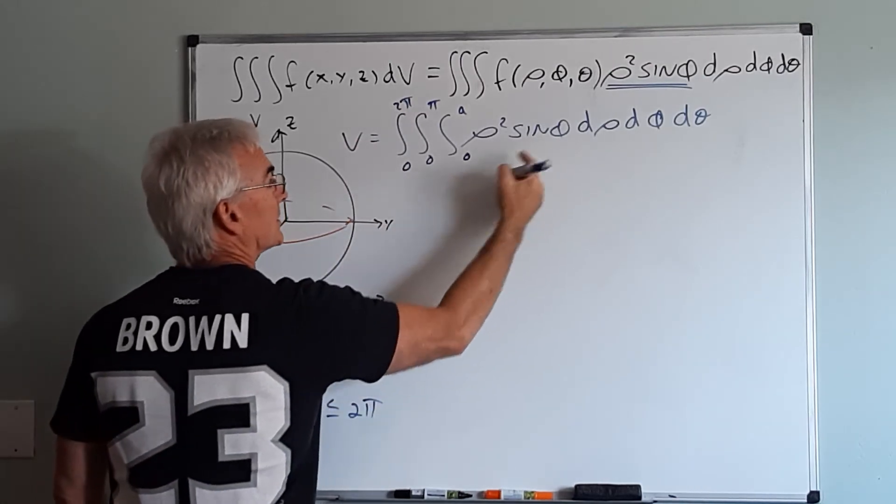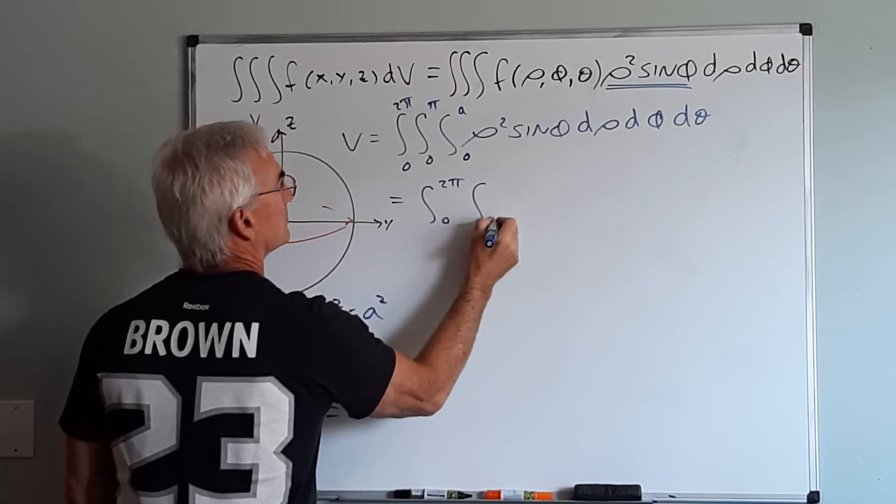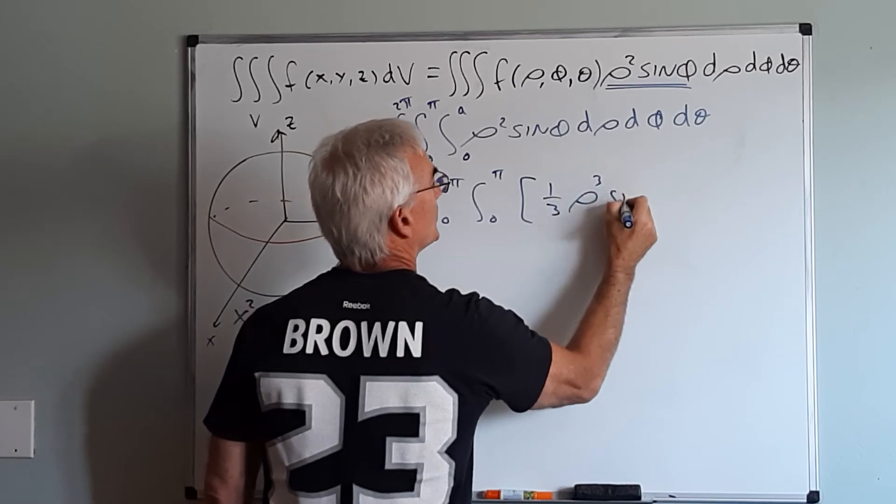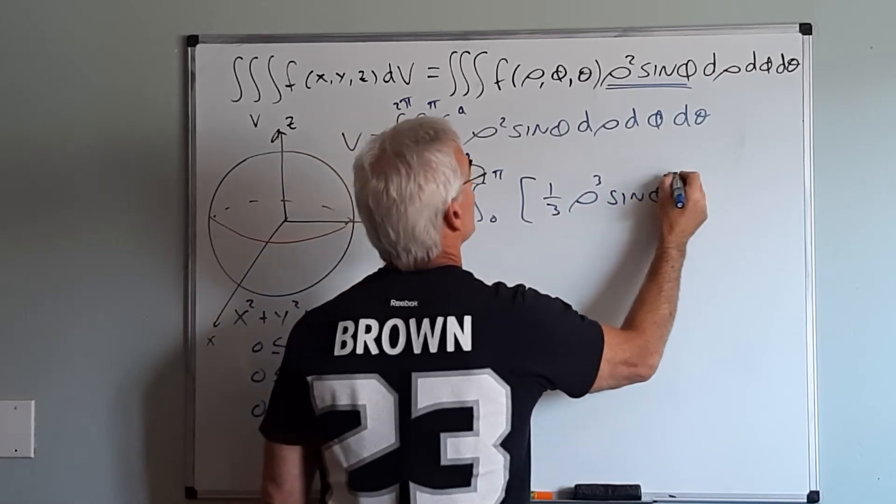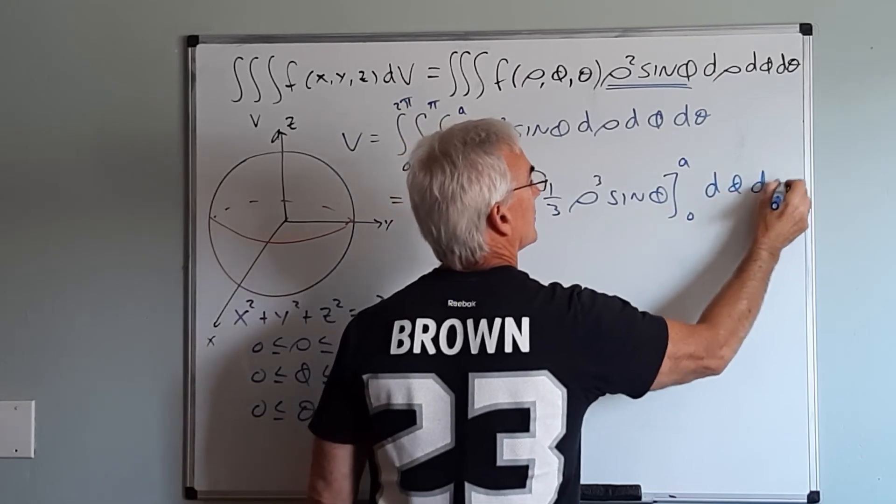So our first integration is with respect to rho. So I'll have one third rho cubed sine phi evaluated from 0 to A, d phi, d theta.